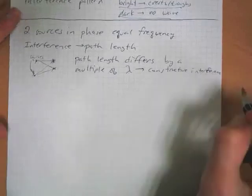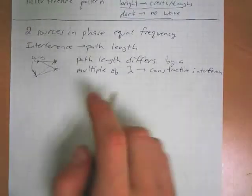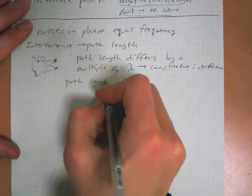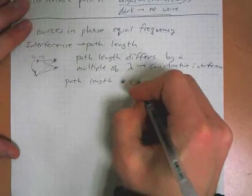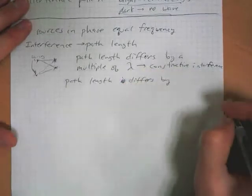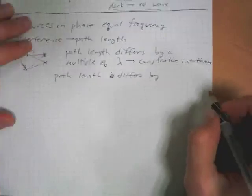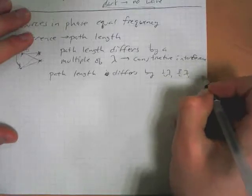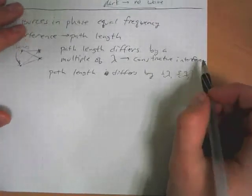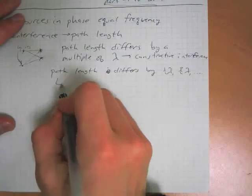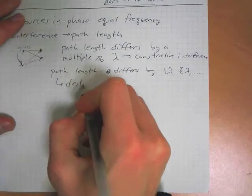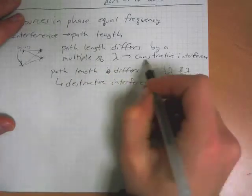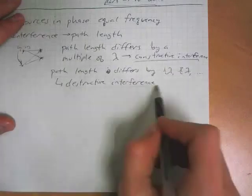Waves will be arriving in phase with one another. But if the path length differs by a half a wavelength, three halves of a wavelength, etc., then they'll be arriving out of phase, and there will be destructive interference. So constructive means they're adding, destructive means they're subtracting, canceling out.